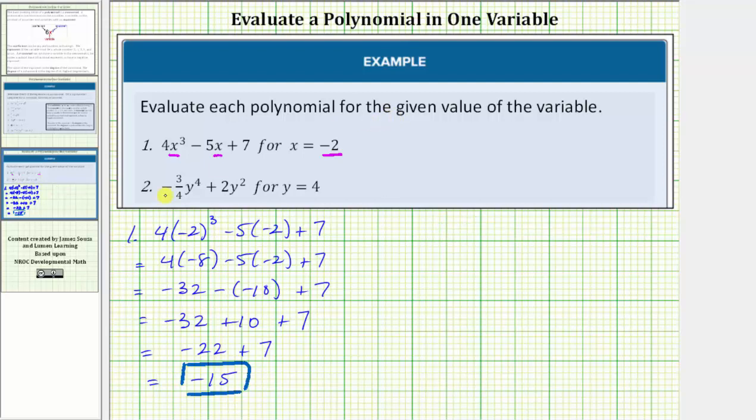Number two, we want to evaluate the polynomial when y equals four. We begin by substituting four for y here and here. Performing this substitution, we would have negative three-fourths times four raised to the fourth power, plus two times four squared.